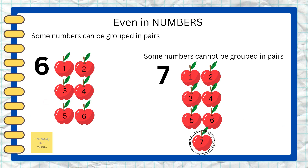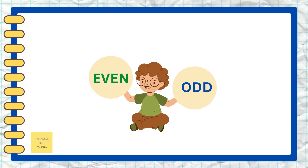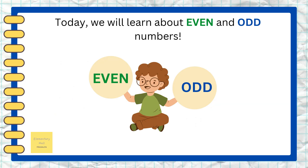Here there are seven apples. Seven cannot be grouped in pairs because there is one apple left alone.